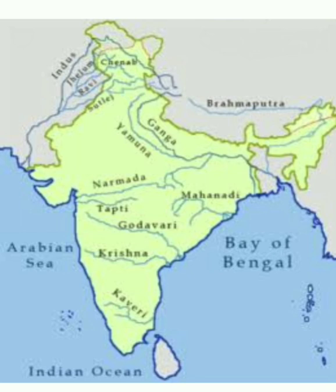We know this Tropic of Cancer. Just above this Tropic of Cancer, the main important rivers are the Indus, its tributaries, the Ganga, and the Brahmaputra — these are the three main important rivers. Just below this line, the Peninsular rivers, which we will discuss afterwards.